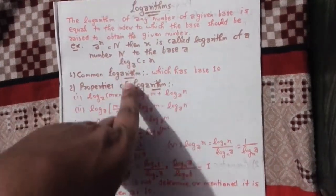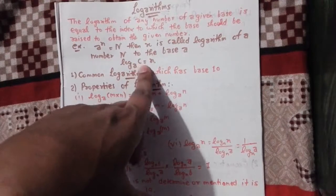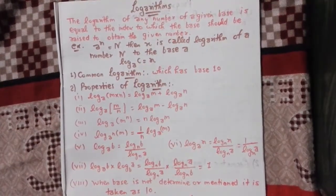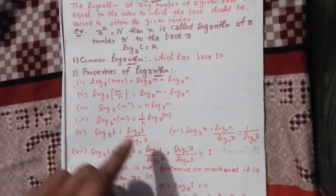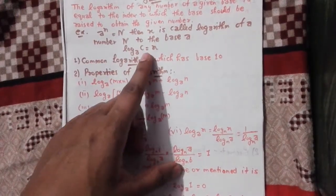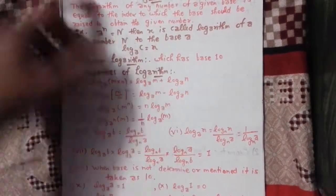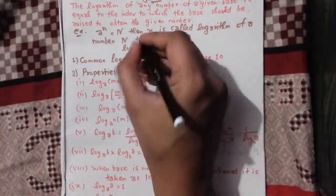the logarithm of number n. So log_a c equals x. Now this will be log_a n, here is a^c, here is a^n.